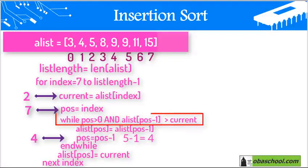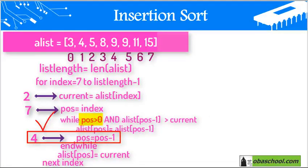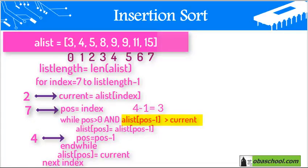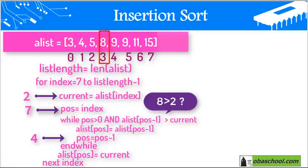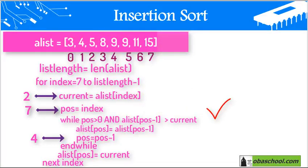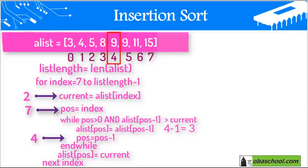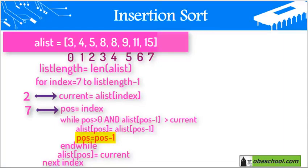We re-enter the while loop. The condition is: while pose, which is 4, is greater than 0 — this condition is true. And a list at index pose minus 1, which is index 3, has the value 8. Is 8 greater than the current, which is 2? It's correct, so we enter the inner while loop to switch the numbers. We put on index 4 the value found on index 3, which is 8. Then we change the value of pose to pose minus 1, which is 4 minus 1 equals 3.